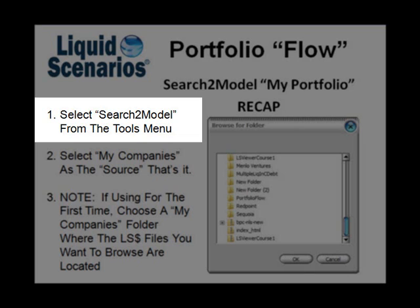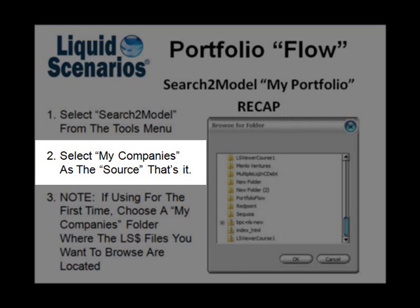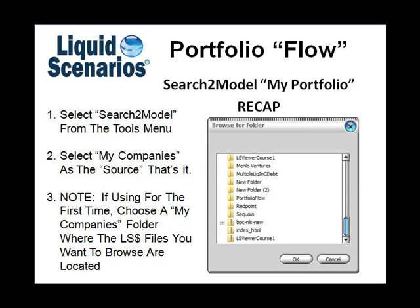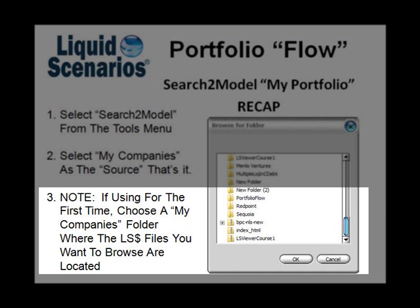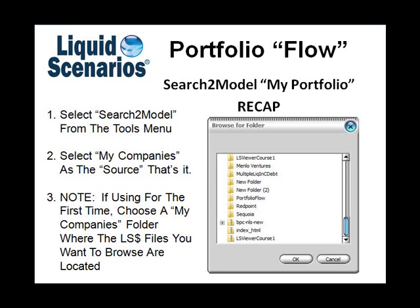So, to recap: simply select Search to Model from the Tools menu, select My Companies as the Source, and that's it. Use your up and down arrow keys to select your portfolio company. If you're using this for the first time, you'll have to identify where your portfolio companies are just by browsing.